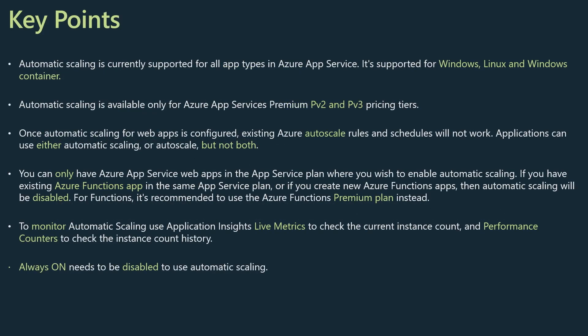Before I move to the demo, I want to call out some important points about this feature. It's supported on all Windows, Linux, and Windows containers. It's only available for premium SKUs — PV2 and PV3. You can either use automatic scaling or auto scale, but not both. If you have auto scale rules already configured and you now go and turn on automatic scaling, we will basically not respect the existing auto scale rules.